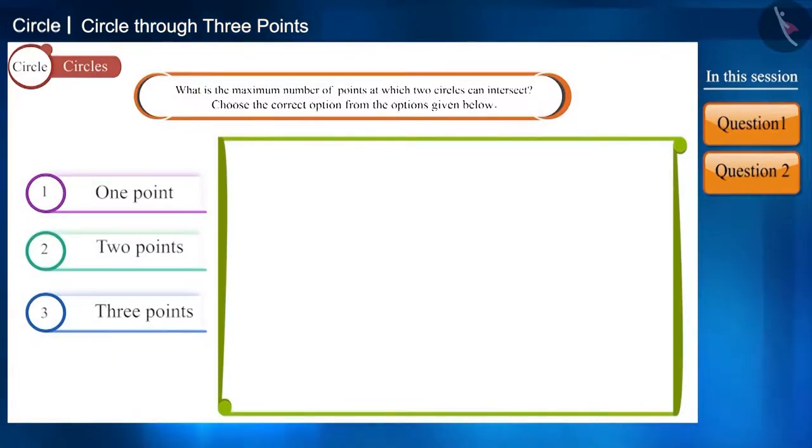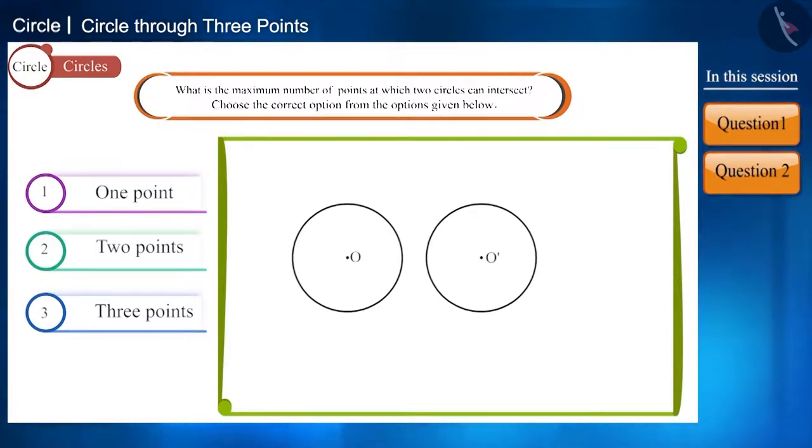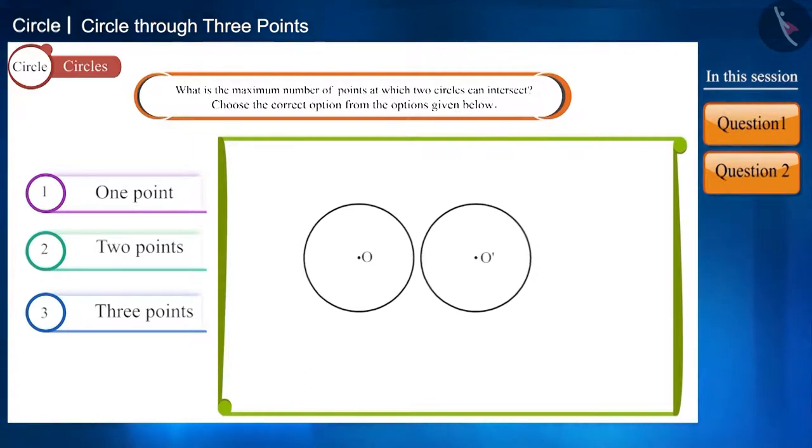Friends, here we will draw two circles whose centers are O and O' respectively. Now, if we keep these two circles in this way, you can see that both these circles are touching each other at one point.